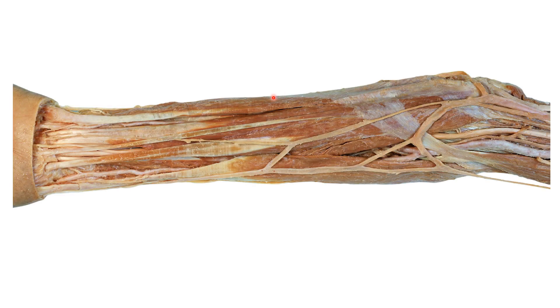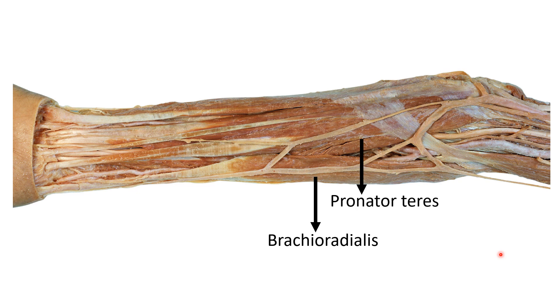Moving to the superficial group of the flexor compartment of the forearm — the anterior compartment is called the flexor compartment because the muscles present here are responsible for the movement of flexion. The first muscle we can identify most laterally on this left-sided forearm is the brachioradialis muscle. Medial to that we can identify the pronator teres, which forms the medial boundary of the cubital fossa. Then medial to the pronator teres, we can identify the flexor carpi radialis.